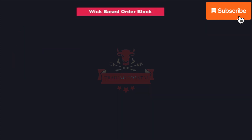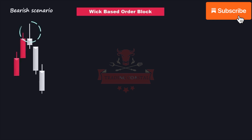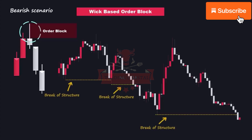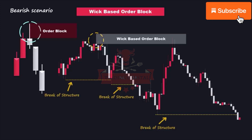The third type is the wick-based order block. In the bearish scenario, a wick-based order block occurs when the shadow or wick of the last buying candle or the first weak bullish candle is greater than half the size of the entire candle. In this pattern, only the wick of the candle is considered as the order block, disregarding the candle's body. This provides an optimized and smaller zone compared to considering the entire candle size as the area of interest. As you can see, price sharply pushed to the downside and created a series of bearish breaks of structure, and the wick of the candle is greater than half of the whole candle — so we highlight the entire wick as our order block instead of the entire candle.